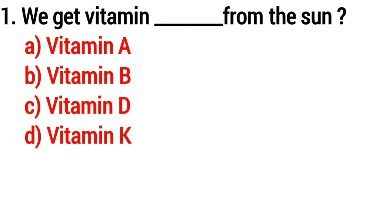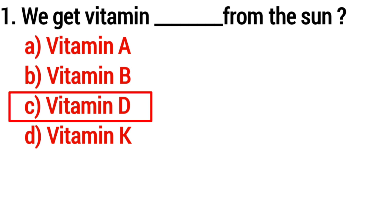Question number one: we get vitamin blank from the Sun. Option A, vitamin A; option B, vitamin B; option C, vitamin D; option D, vitamin K. The correct answer is option C, vitamin D.